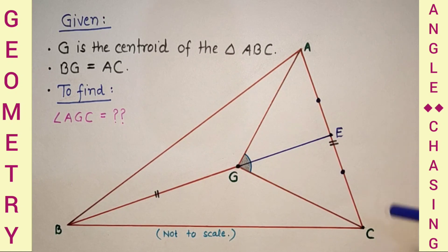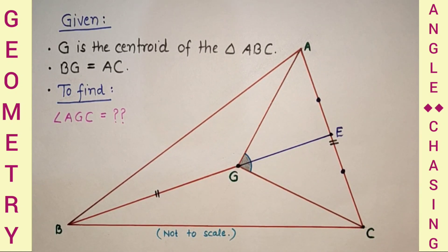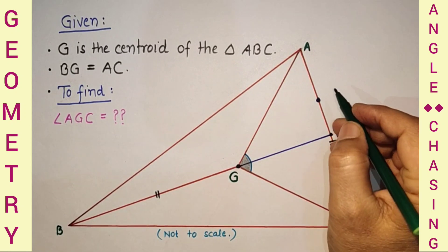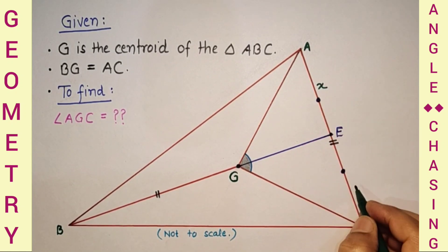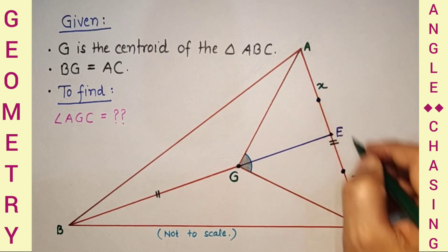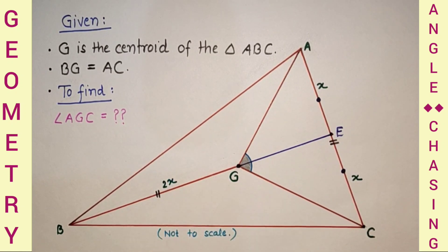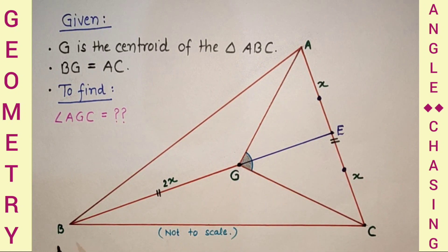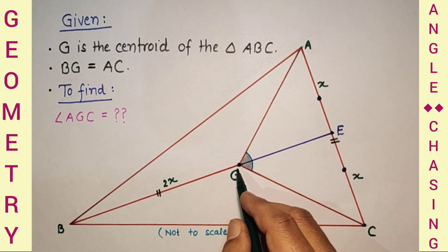We are given that the length of BG and AC are equal. So if we take AE as X, then EC will also be X, making AC equal to 2X, and therefore BG equals 2X. Since the centroid divides the median in ratio 2:1, if BG is 2X, then GE will be X.